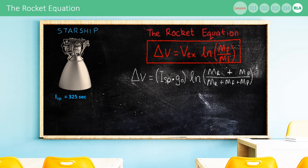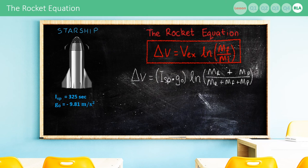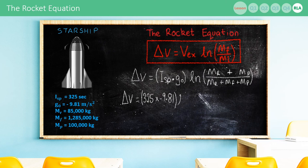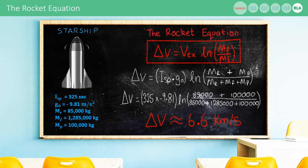Starship uses Raptor engines with an ISP of about 325 seconds. G0 is minus 9.81 meters per second squared. The dry mass of the rocket is about 85 tons, the mass of fuel or propellant is about 1,285 tons, and let's assume that we have a payload of about 100 tons. We're taking 100 tons into space. Plugging in the numbers, we get a delta v budget of about 6.6 kilometers per second.